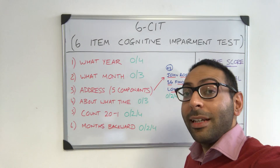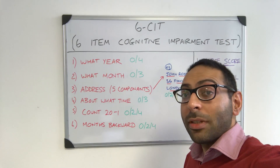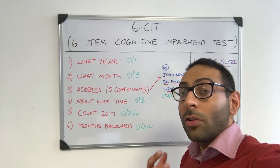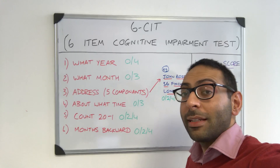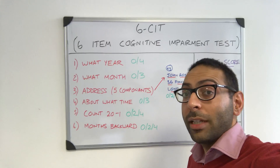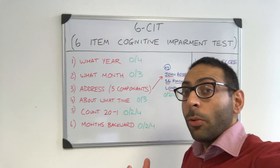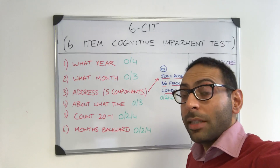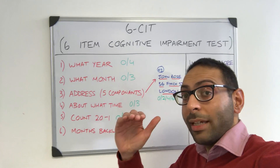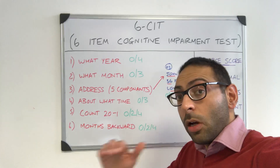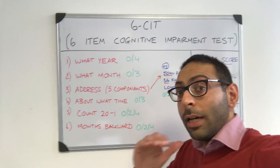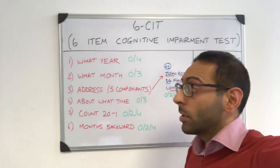A quick video about the six CIT test, or six item cognitive impairment test, when you're looking at assessing cognition. There are six questions that you need to ask. The maximum score you can get is 28, but you're looking for as low a score as possible.